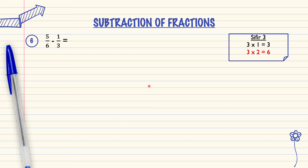5 over 6, we rewrite it. 3 will be multiplied by 2 to become 6. If the denominator is multiplied by 2, the numerator must also be multiplied by 2.